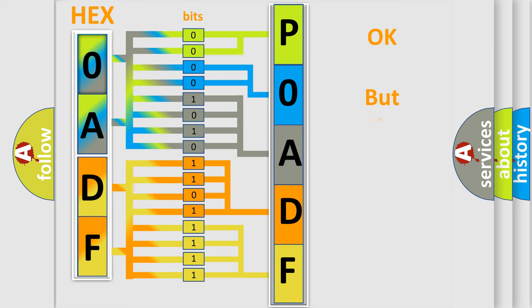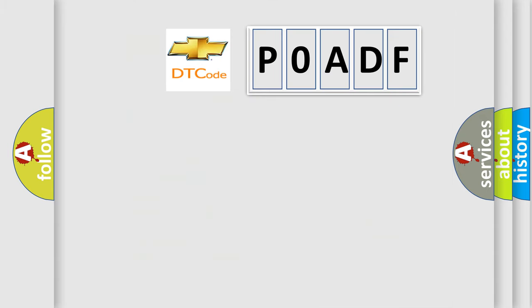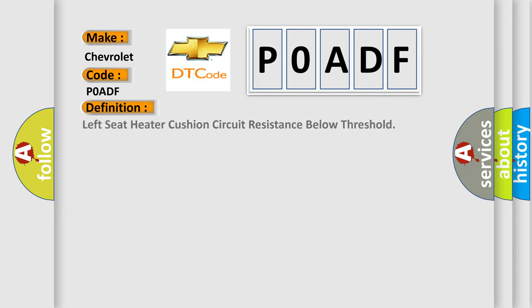We now know in what way the diagnostic tool translates the received information into a more comprehensible format. The number itself does not make sense to us if we cannot assign information about what it actually expresses. So, what does the Diagnostic Trouble Code POADF interpret specifically for Chevrolet car manufacturers? The basic definition is: Left seat heater cushion circuit resistance below threshold.